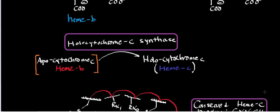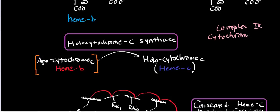Welcome back to the respiratory chain playlist. In the last video, we looked at the mechanism of ubiquinol cytochrome C oxidoreductase, also more commonly known as complex 3 of the mitochondria. We saw that in that reaction, it required a protein that exists mostly in the inner membrane space — it's the only soluble protein of the respiratory chain. It's called cytochrome C.